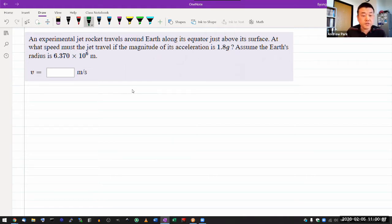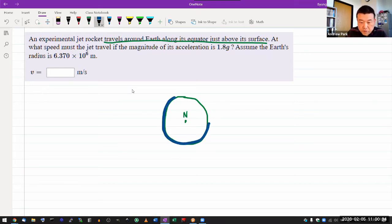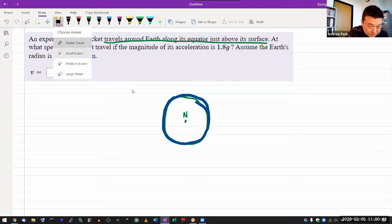It's saying experimental jet rocket travels around the earth along its equator just above its surface. So I have earth here. Let me imagine that I'm looking at it from the North Pole, so this is North Pole. The equator is actually the rim of this circular looking thing. By the way, because sometimes I joke about flat earth stuff, I do believe earth is an actual globe. I don't believe in flat earth, sometimes I joke about it, but I don't.